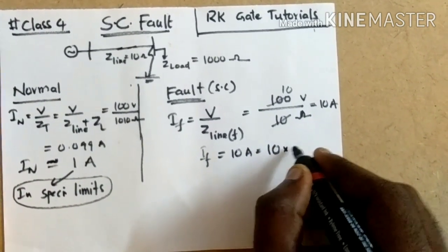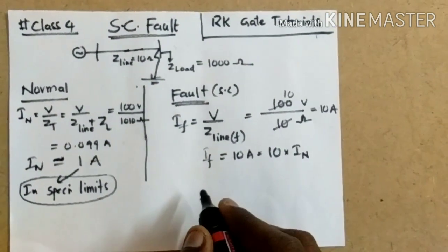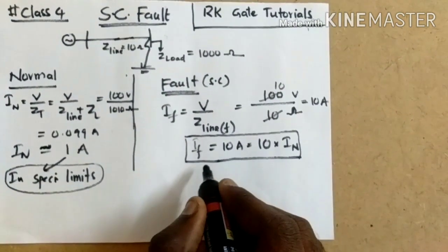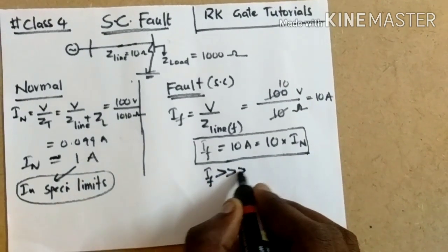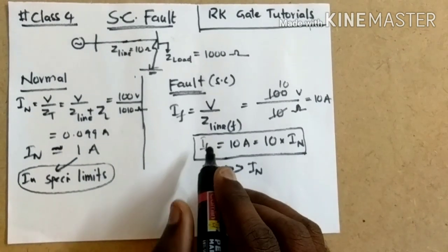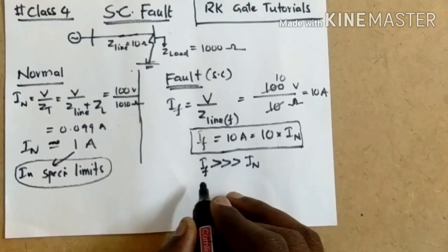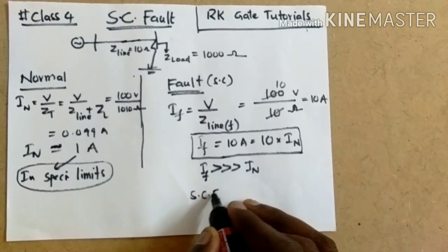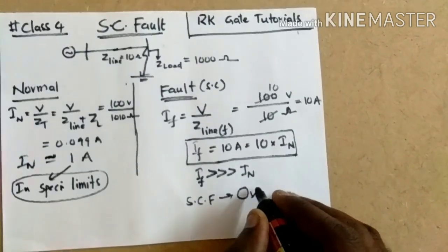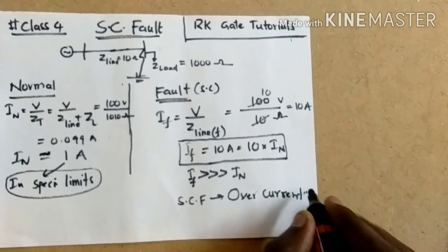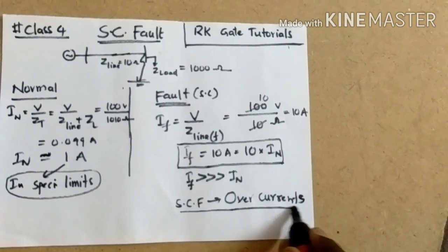The fault current is 10 amps, which is 10 times the normal current. This means the current during short circuit fault is far more than the normal current. From this we can conclude that the short circuit fault results in the flow of over-currents in the line. The consequence of the short circuit fault is the flow of over-current — this is an important point.